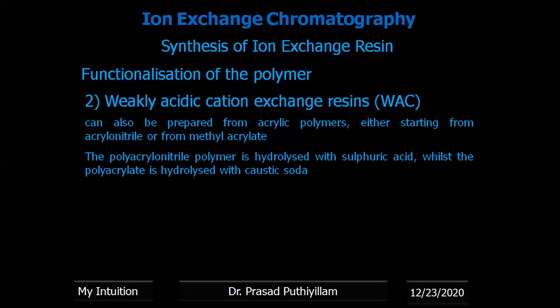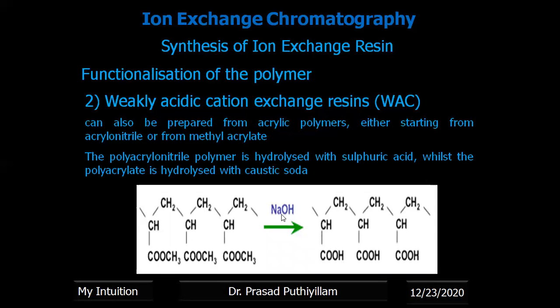The CN group in polyacrylonitrile can be converted into a carboxylate (COOH) group by treating with sulfuric acid, while polyacrylate is converted to COOH by reaction with caustic NaOH. Since this is aliphatic in nature — no aromatic or benzene ring — there is no aromaticity.